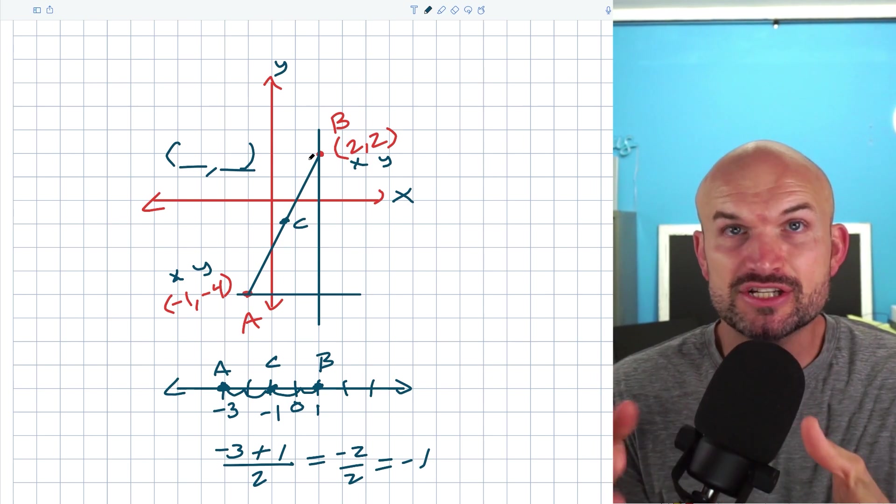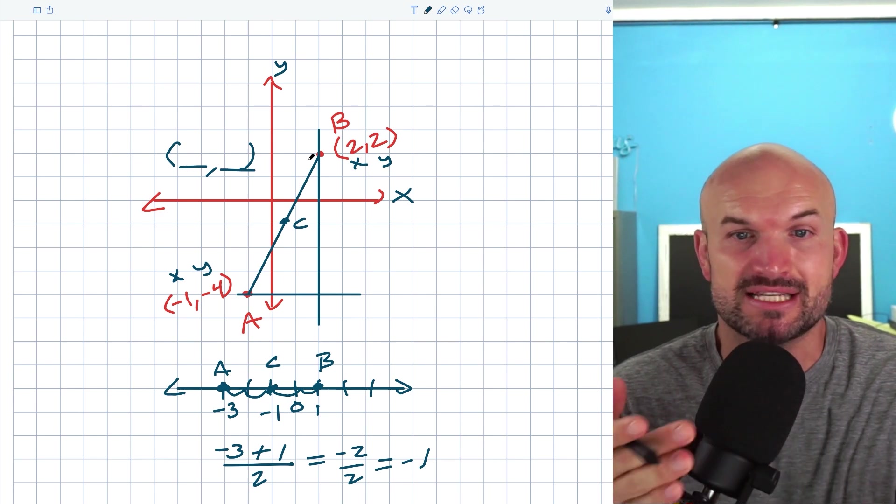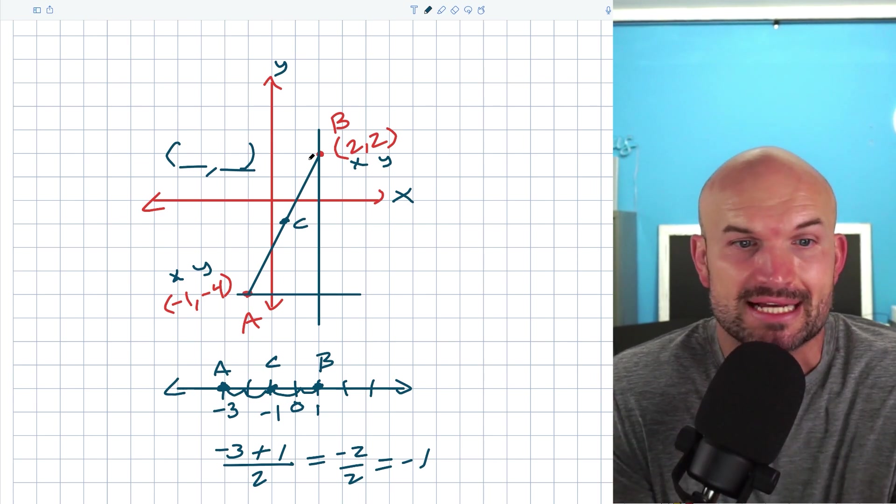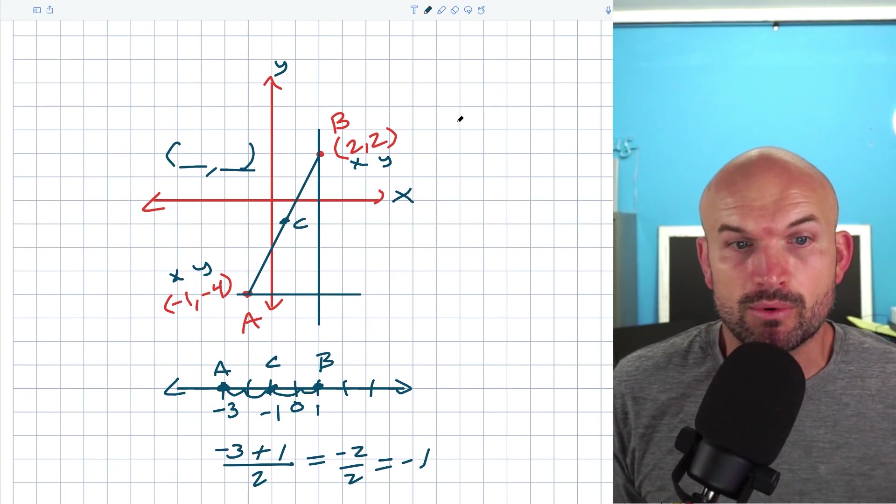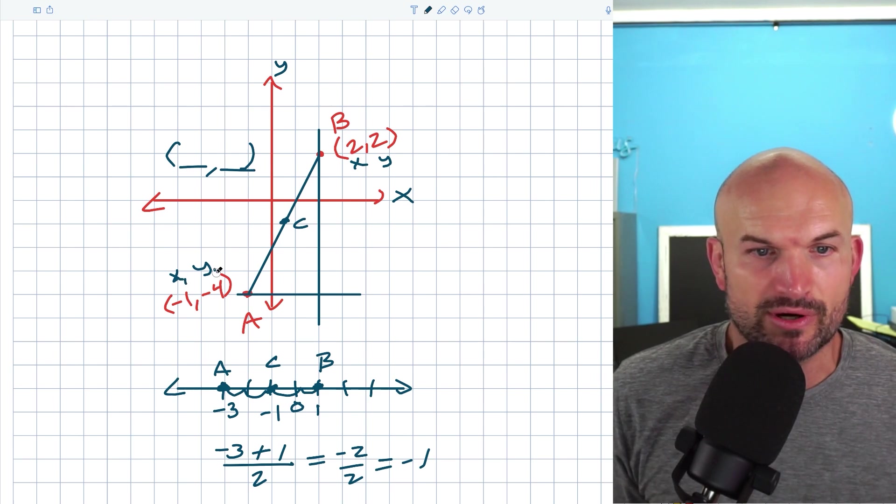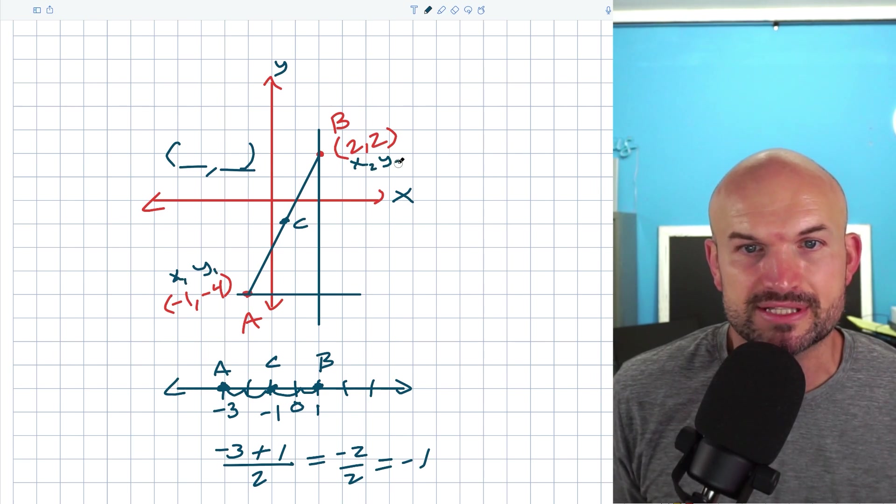And the reason why we use those is just to be able to differentiate between the X and the Y coordinates. Because if we don't differentiate them and I say, what is X, you're not going to know which X I'm talking about. Am I talking about negative one or am I talking about two? So what we're going to want to do here is just say, well, I'll call this the first point and I'll call this the second point.